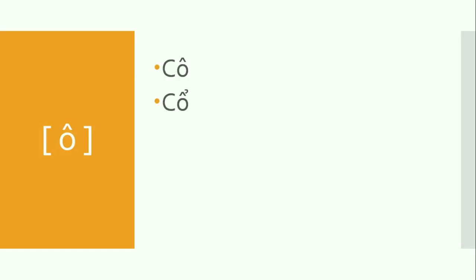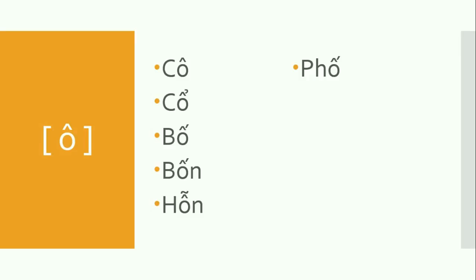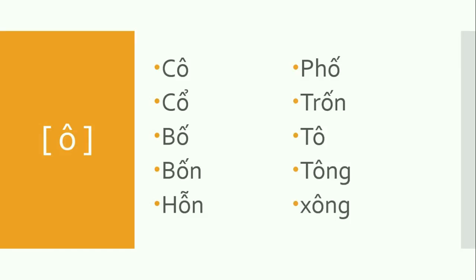With the second one — Ô — we have some examples like this: cô, cổ, bố, bốn, hỡn, phố, trốn, tô, tông, sông.